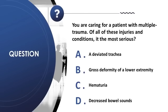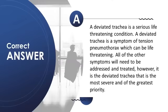Question 16: You are caring for a patient with multiple trauma. Which injury is most serious? A) a deviated trachea, B) gross deformity of a lower extremity, C) hematuria, D) decreased bowel sounds. Correct answer is A. A deviated trachea is a serious, life-threatening condition and a symptom of tension pneumothorax. All other symptoms need to be addressed, but the deviated trachea is the most severe and of greatest priority.